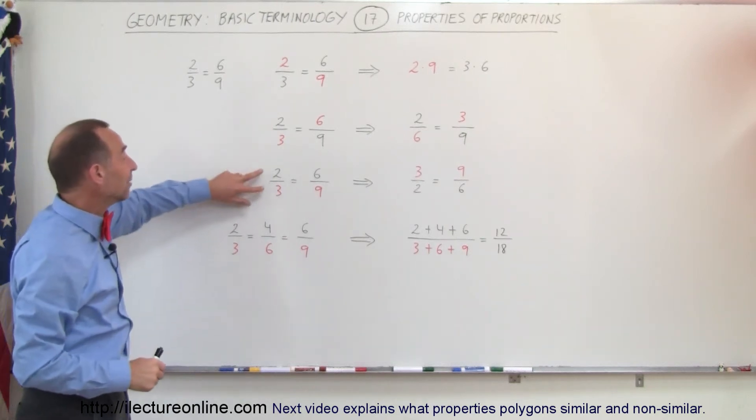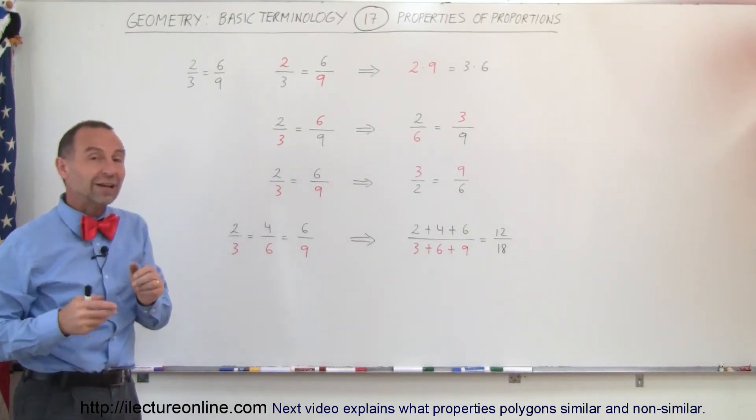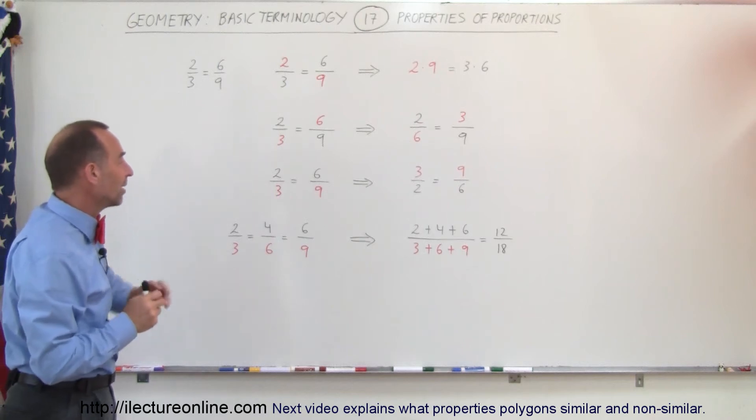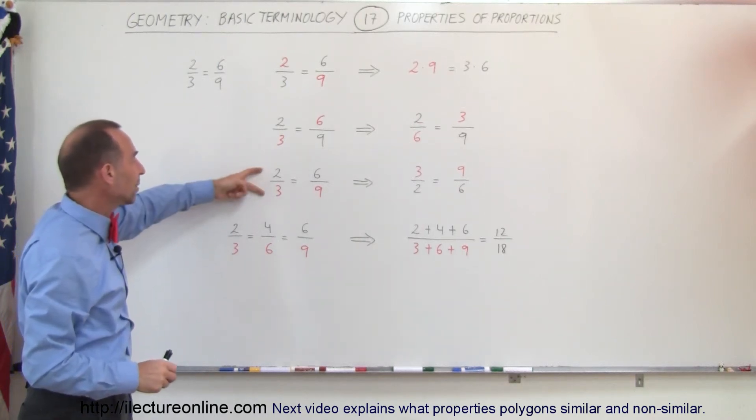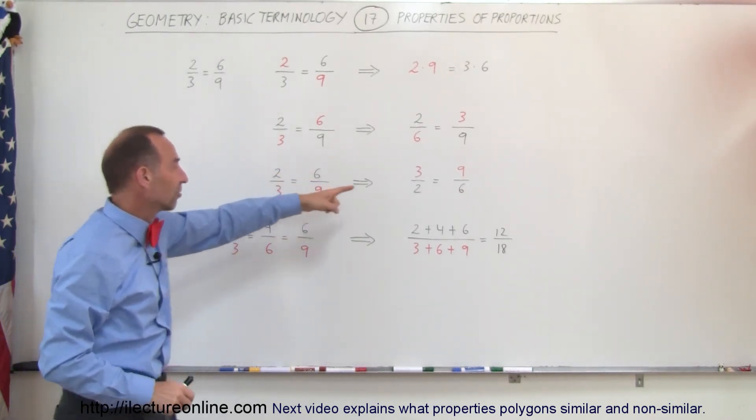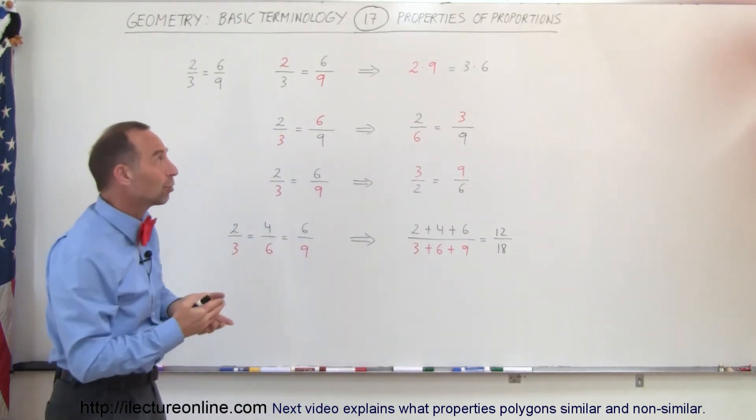Another thing that we can do is we could take the inverse of both of the fractions on either side of the equal sign, so instead of writing 2/3, we could write 3/2, instead of 6/9, we write 9/6, just like we did over there, and we have a valid proportion.